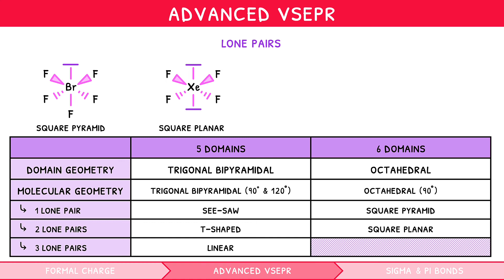There are also two geometries rarely tested in the exams, but we will quickly show them for completeness. If the electron geometry is octahedral with three lone pairs, the resulting shape is known as T-shaped, and if the electron geometry is octahedral with four lone pairs, the resulting shape is known as linear.